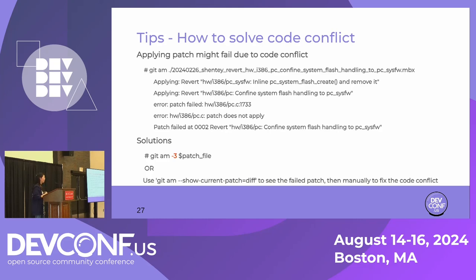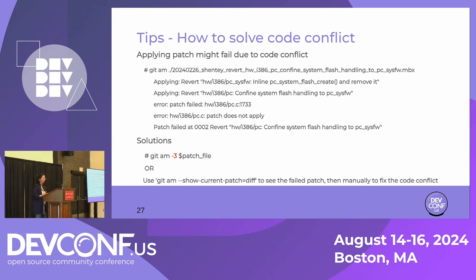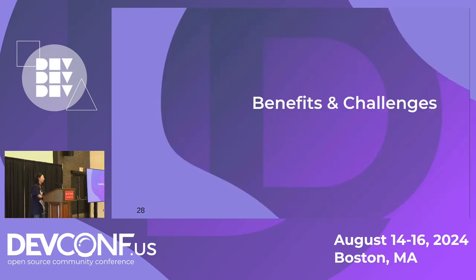Another tip is about how to solve code conflicts when applying patches. The error will show which patch failed. We are suggested to solve this by adding the minus-three option to the git am command, which works sometimes but not always. The always-working solution is to manually fix the code conflict. Use git am show-current-patch equals diff to see the detail, manually fix the conflict, then continue with git am to apply.